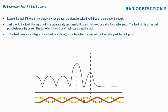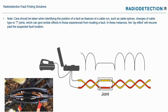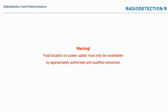We walk along using the locator as if looking for a sound, looking for the regular peak and trough. If the fault is suitably low resistance, the signal will drop at the point of the fault — we'll get a big signal, then a small signal, then nothing. Just prior to the fault the signal jumps up, then drops down. We need to be careful about joints, because when cables are side by side in a joint, we get a flattening effect — but afterwards the pattern of peaks and troughs continues. We need to know what joints look like so we don't start digging up a perfectly good joint. Remember: this work should only be undertaken by appropriately authorized, qualified personnel. In the UK, this only really takes place with the district network operators.